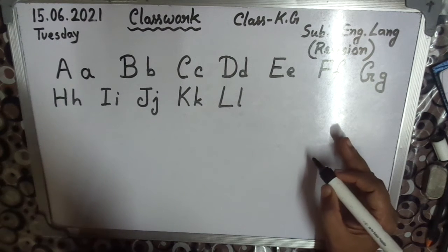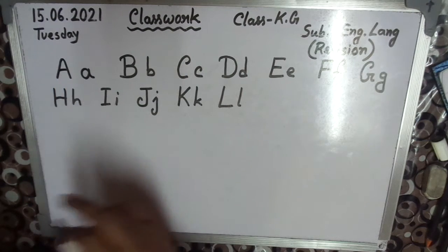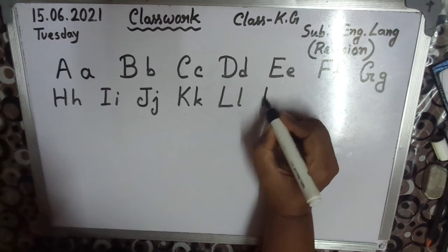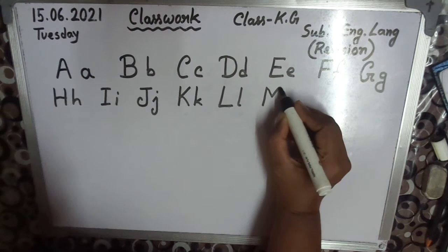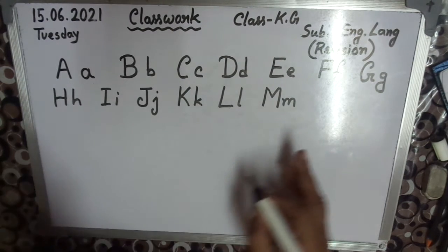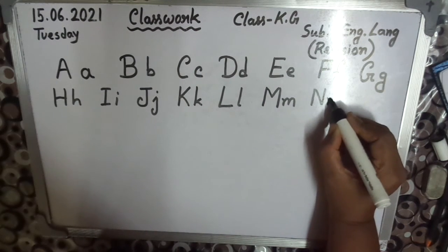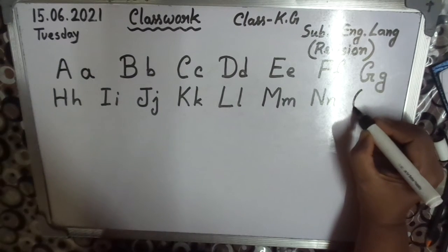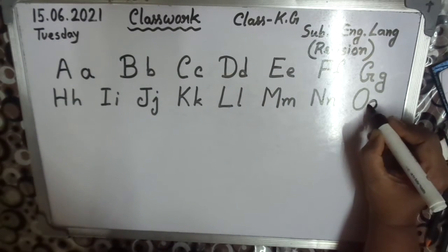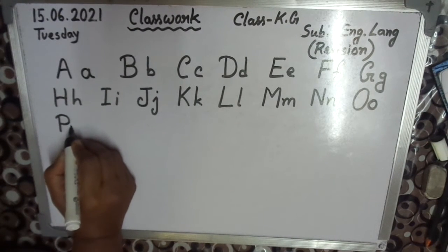I hope everyone understood capital and small letters. Capital letter, small letter. M — capital M, small m. N — capital N, small n. O — capital O, small o. P — capital P, small p.